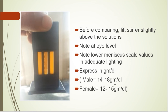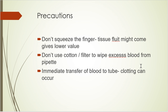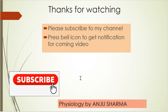In males, 14 to 18 g/dL is the normal value, and in females, 12 to 15 g/dL is the normal value. That's how we estimate hemoglobin. Some precautions: don't squeeze the finger because tissue fluid can come and give a wrong value. Don't use cotton or filter paper to wipe excess blood because it can withdraw the blood and give a wrong value. Immediately transfer the blood to the tube because clotting can occur. That's all about hemoglobin concentration estimation. Thank you for watching.